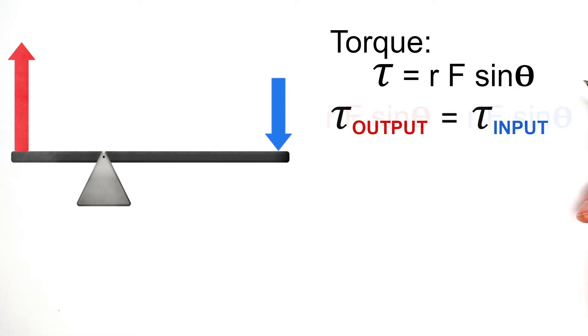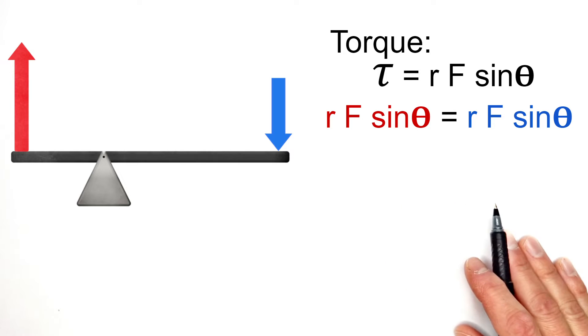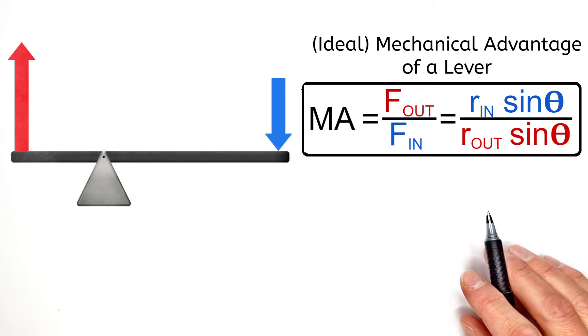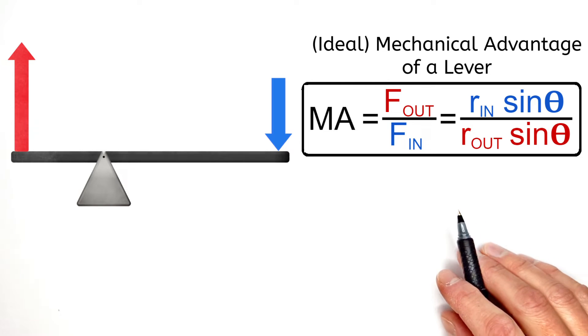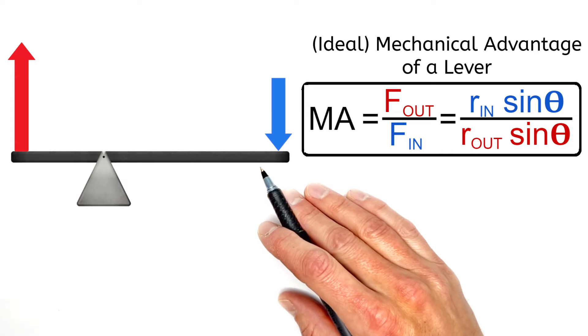So applying the torque equation to both sides of the lever, we can rearrange this equation for the mechanical advantage of our lever. And realize, this R in the equation is no different than what we're calling d earlier—that is, the distance from the pivot point to the force.